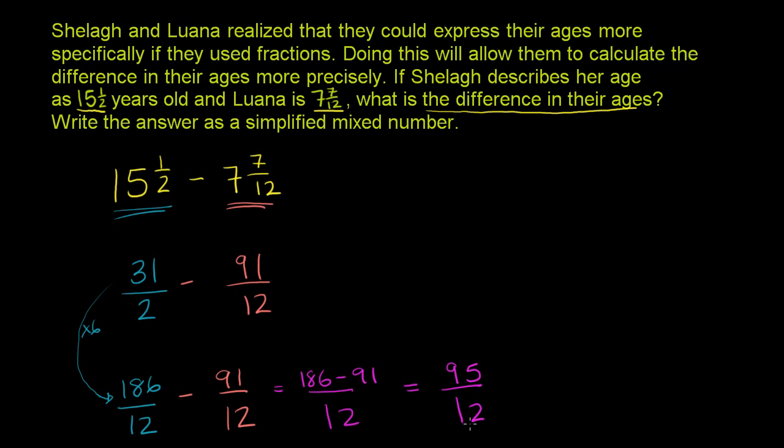So the way we've expressed it right now, it is just an improper fraction, but they want us to write it as a simplified mixed number. So let's do that. How many times does 12 go into 95? Let's see, 8 times 12 is 96, so that's too big. So 12 goes 7 times. So this is equal to 7.